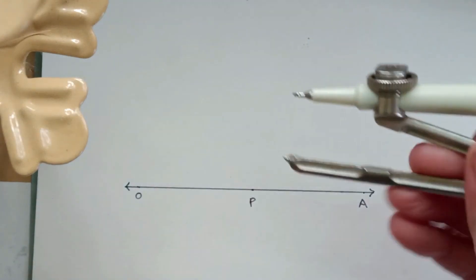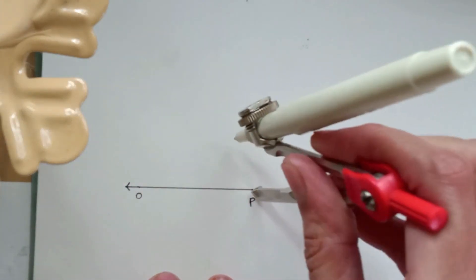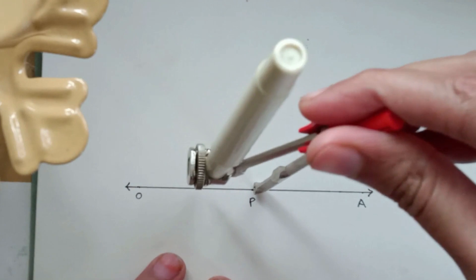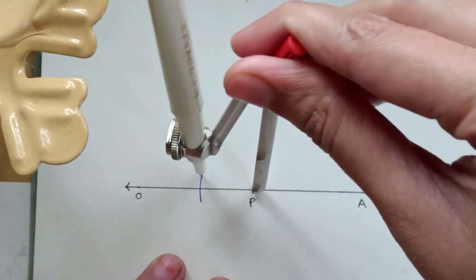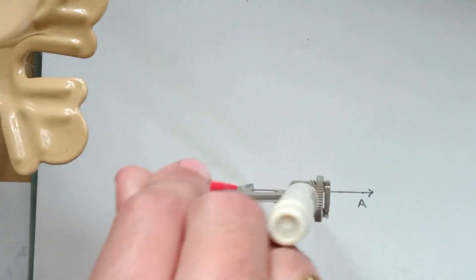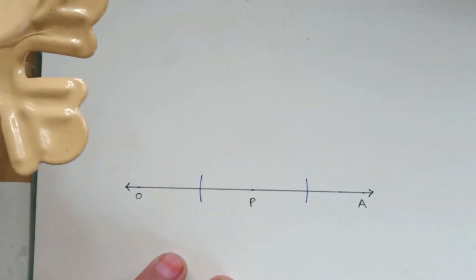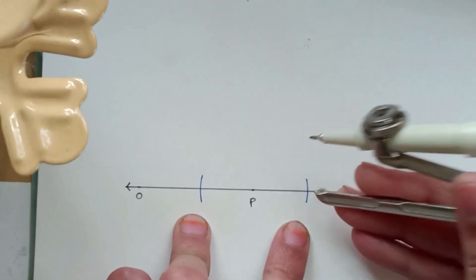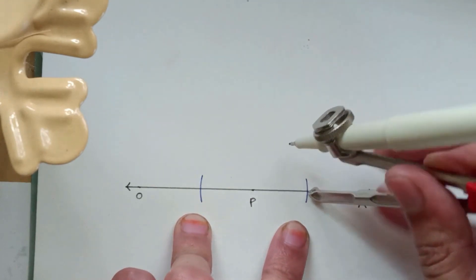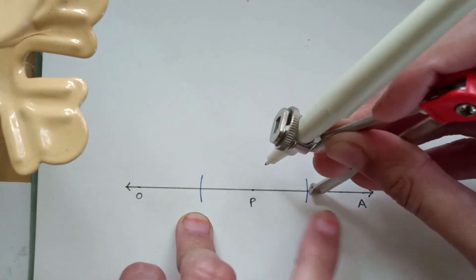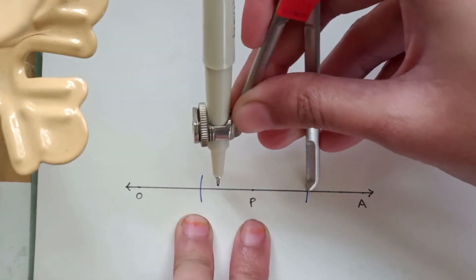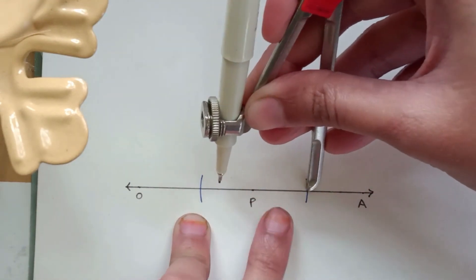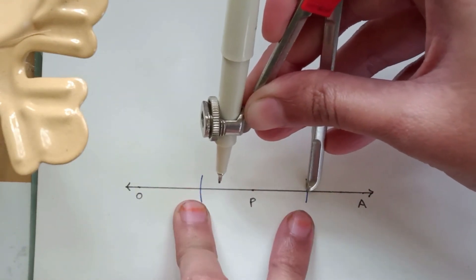Then take any random amount of distance in the compass. Keep the point on P and draw two arcs on the left hand side and right hand side.